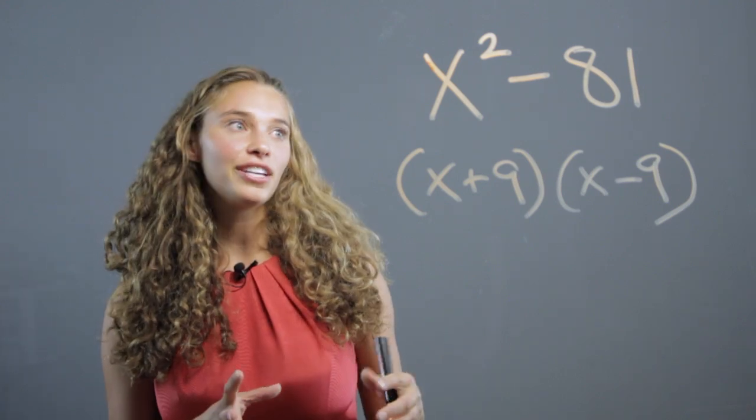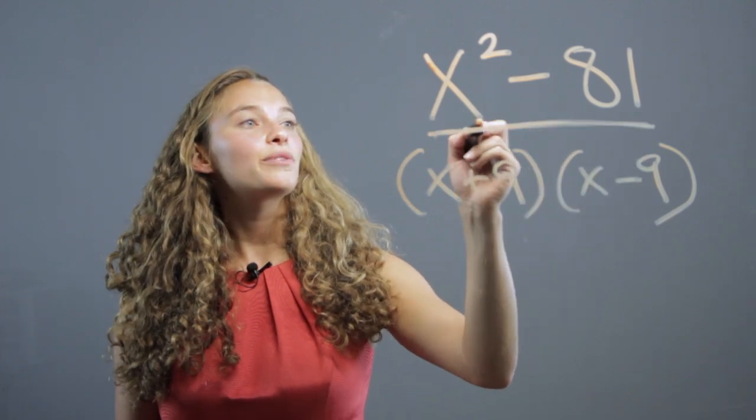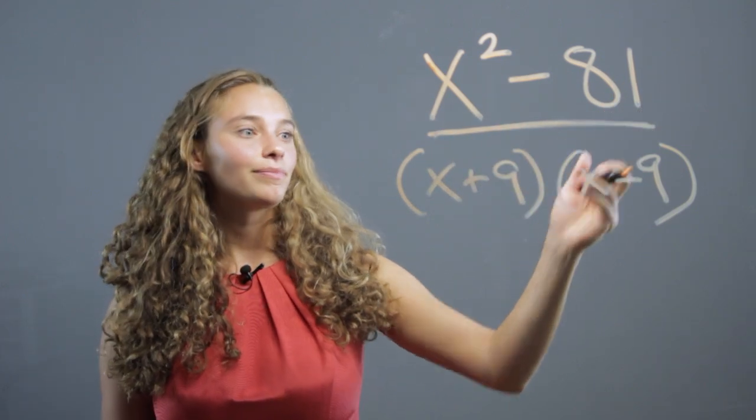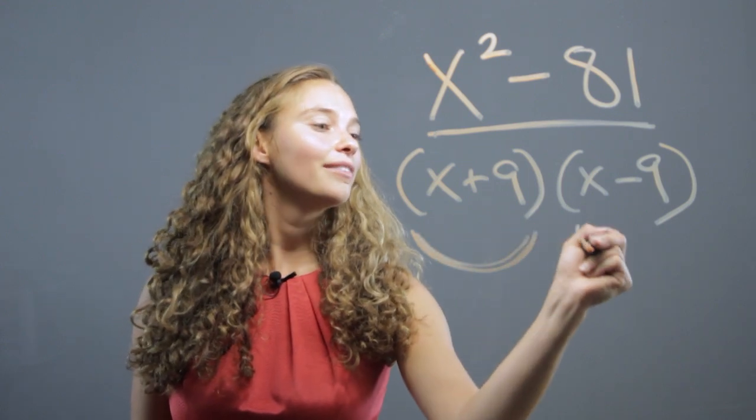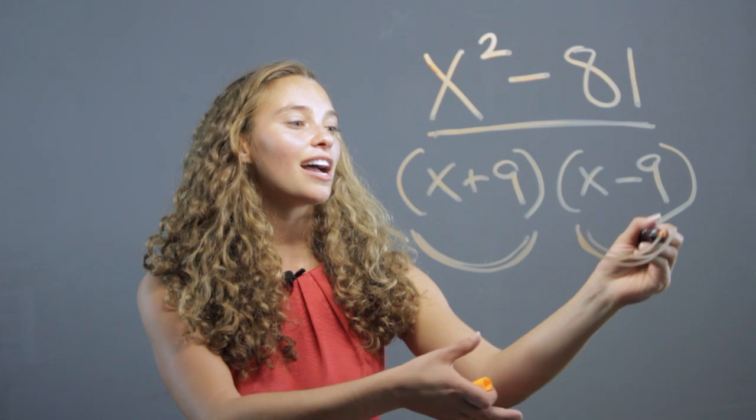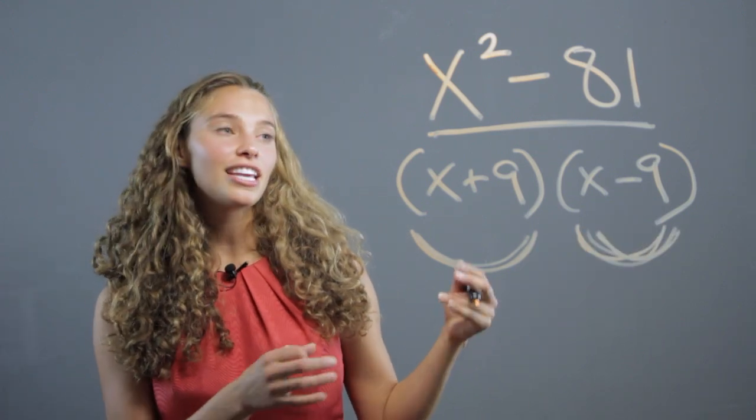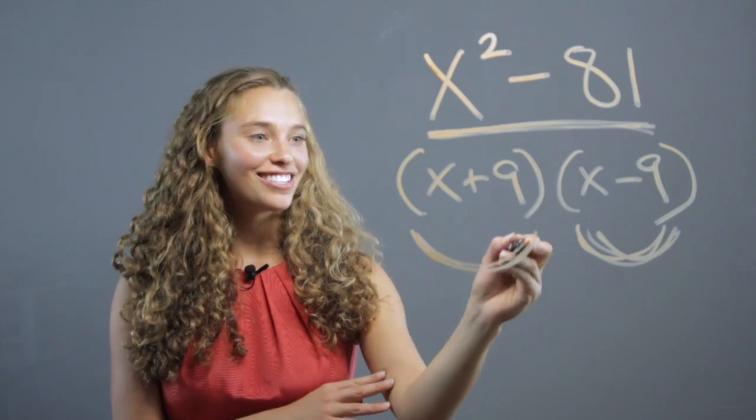So some students have this, x squared minus 81, while other ones have the factors of that. x plus 9 will be on one student, x minus 9 will be on another student. So the students in one group have to find their factors.